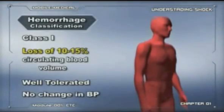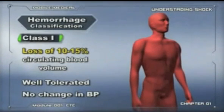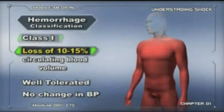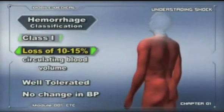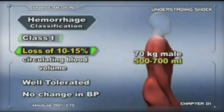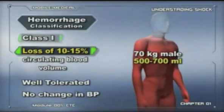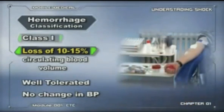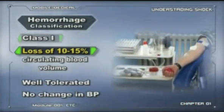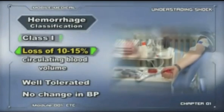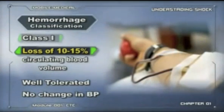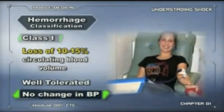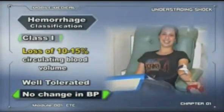Hemorrhage has been further stratified into classes. Class I hemorrhage occurs when there is a loss of 10 to 15 percent of the circulating blood volume. In a 70 kilogram male, this would be between 500 and 700 milliliters. For perspective, when a person donates blood, typically 500 milliliters is removed. This amount of blood loss is typically well tolerated and no change in blood pressure is usually seen.